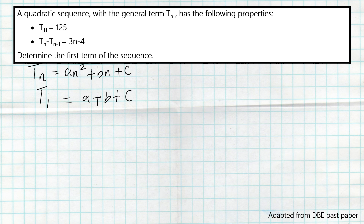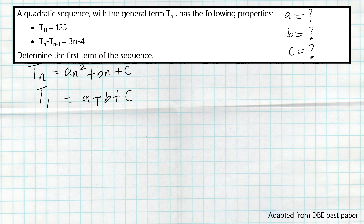To get term number one, we need the values of a, b, and c. If we manage to get a, b, and c, then we get the first term of the quadratic sequence. This is not far from a question that says determine the general formula of the quadratic sequence — we still need to find a, b, and c.